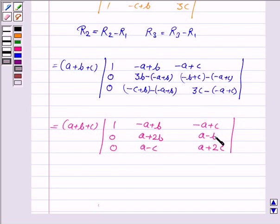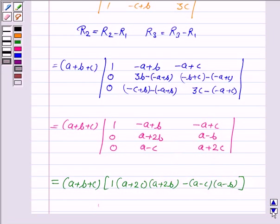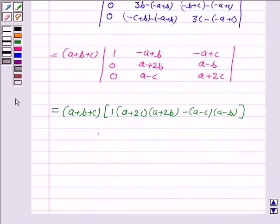Now we expand this determinant along first row so that we get 1 into a plus 2c into a plus 2b minus a minus c into a minus b, and the other terms would be 0.